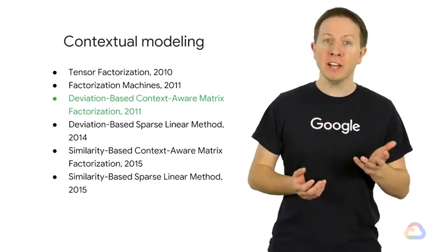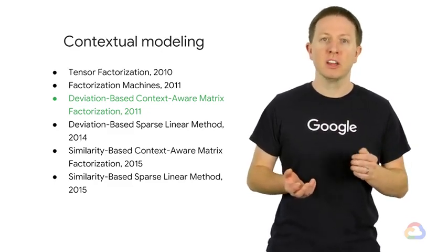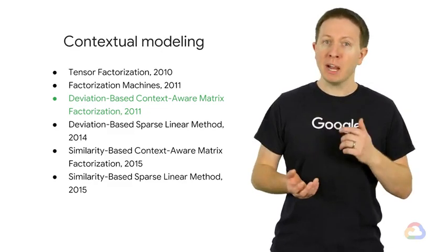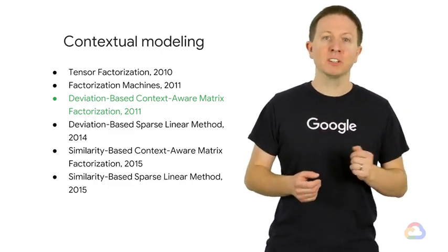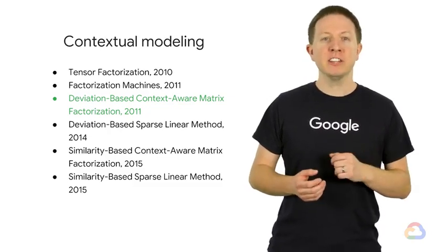Contextual modeling has many different algorithms to learn multi-dimensional models of contextual user-item interactions. Factorization became very popular and has led to many methods over the years. Let's take a deeper look at deviation-based context-aware matrix factorization.